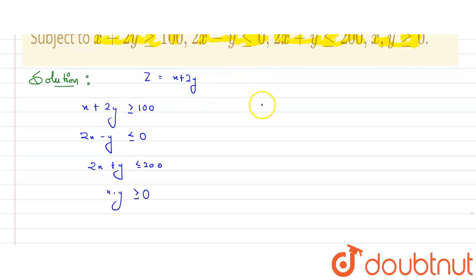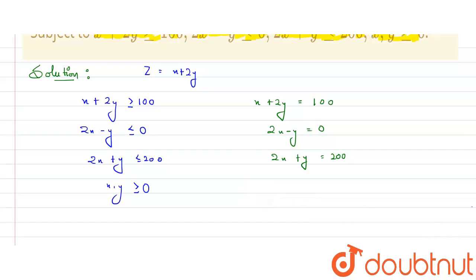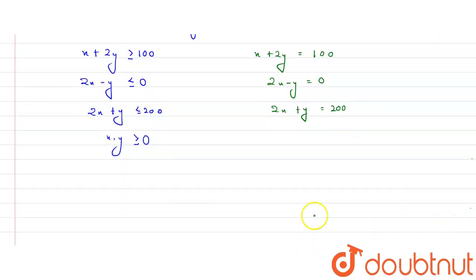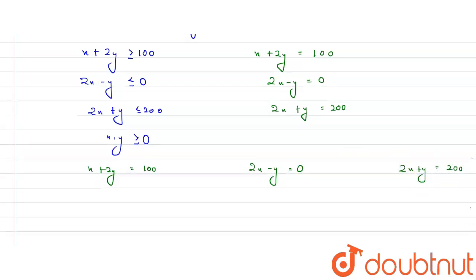Let's write the equations in standard form. Equation 1: x + 2y = 100. Equation 2: 2x − y = 0. Equation 3: 2x + y = 200. These are the three boundary equations we'll work with.